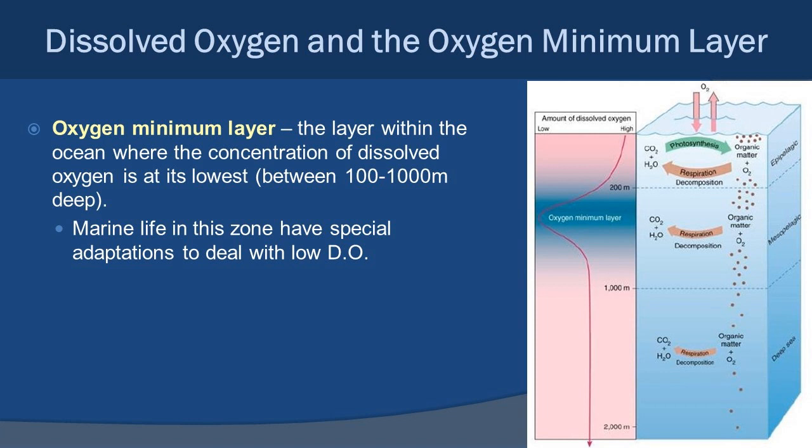Below that surface layer, dissolved oxygen begins to decrease rather dramatically. This is where we have the oxygen minimum layer — the layer within the ocean where the concentration of dissolved oxygen is at its lowest, generally between 100 and 1,000 meters deep. In this zone, marine life have special adaptations to deal with low dissolved oxygen.